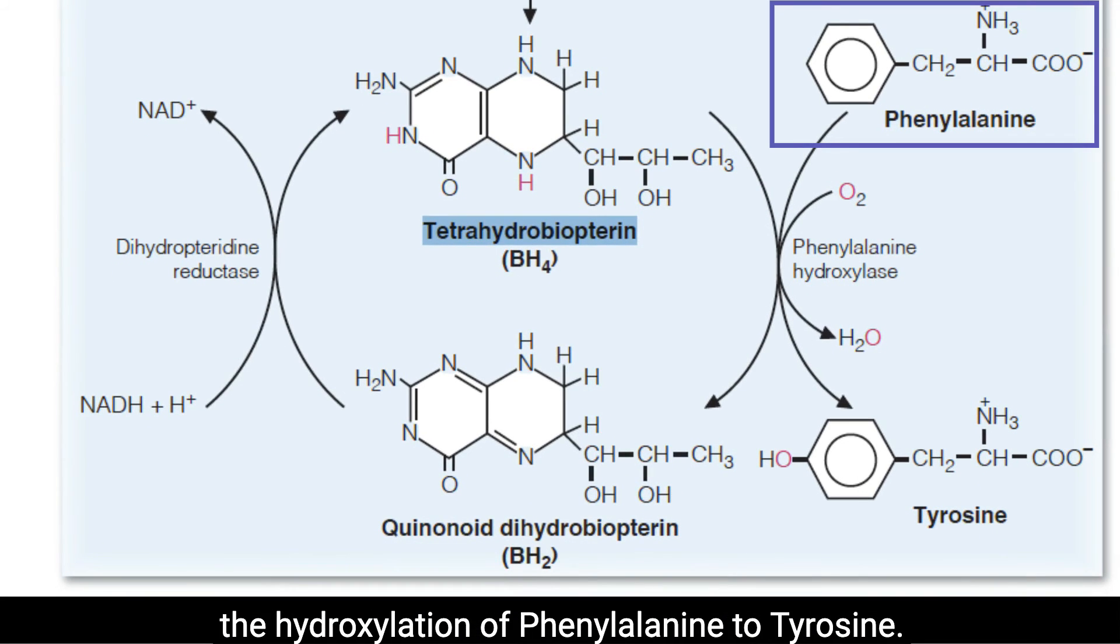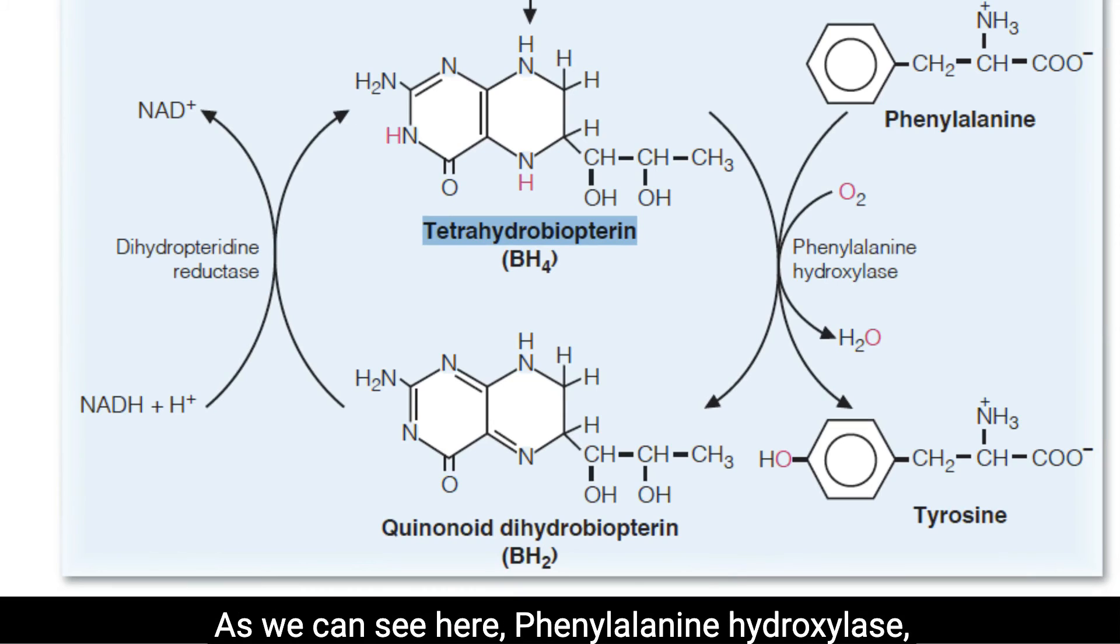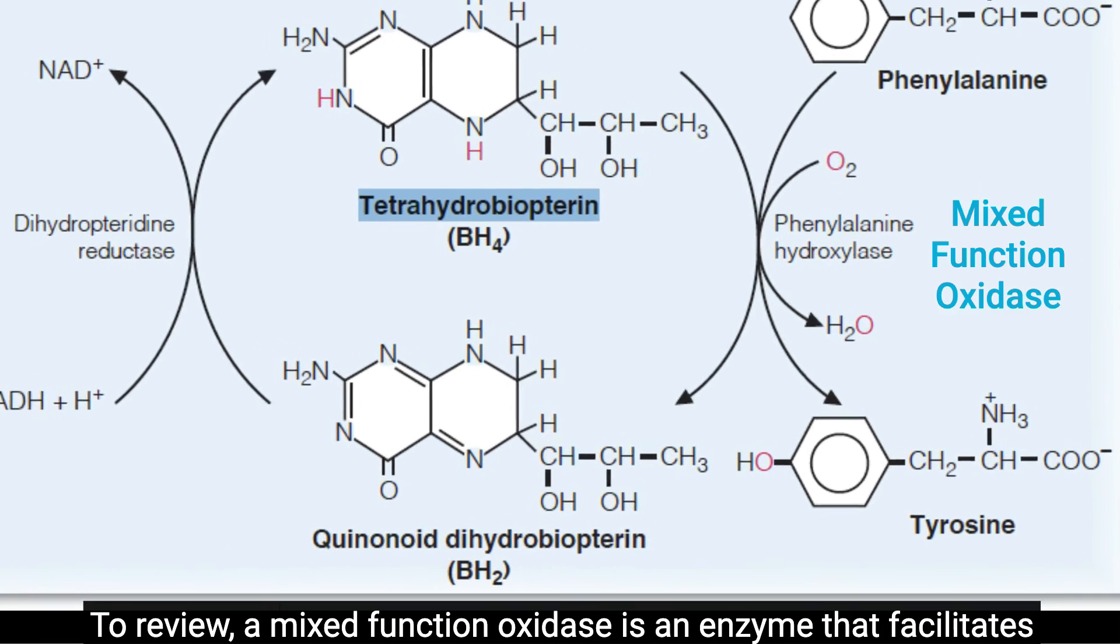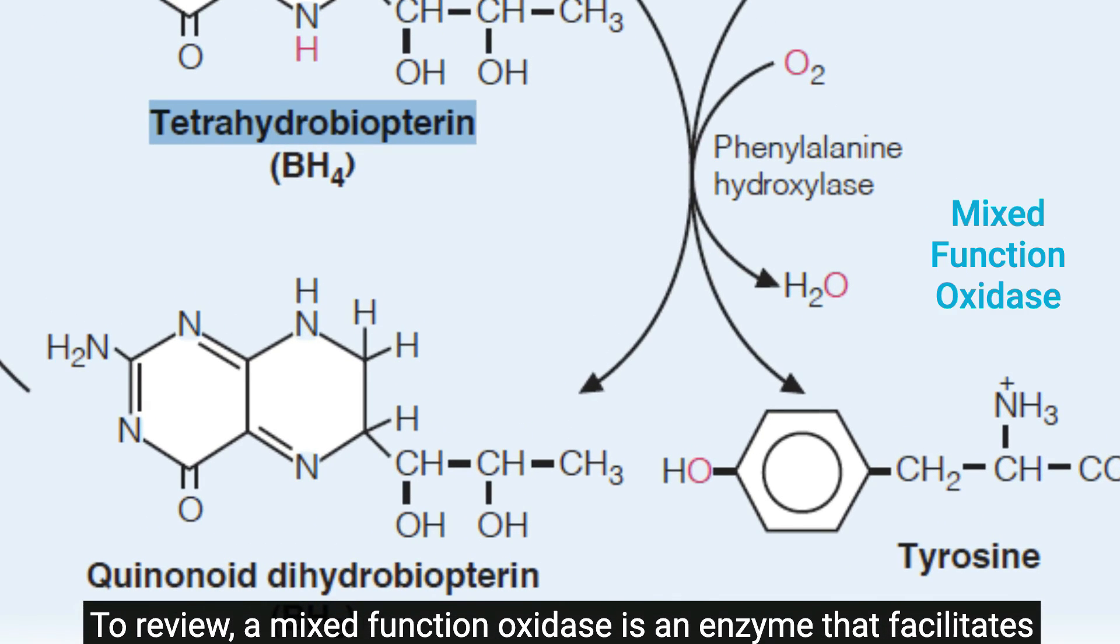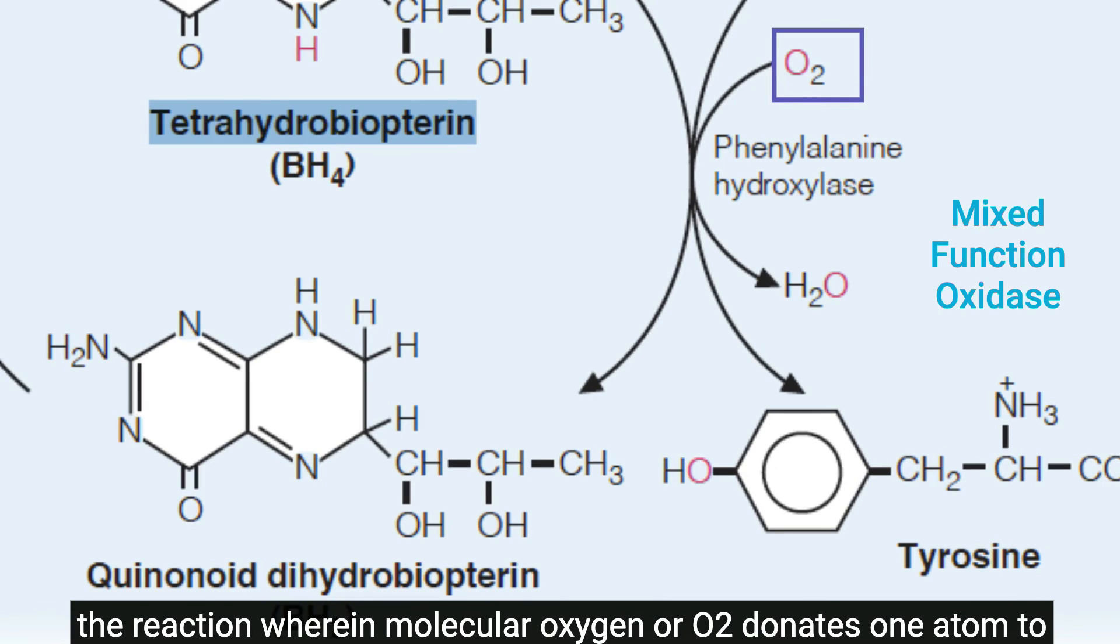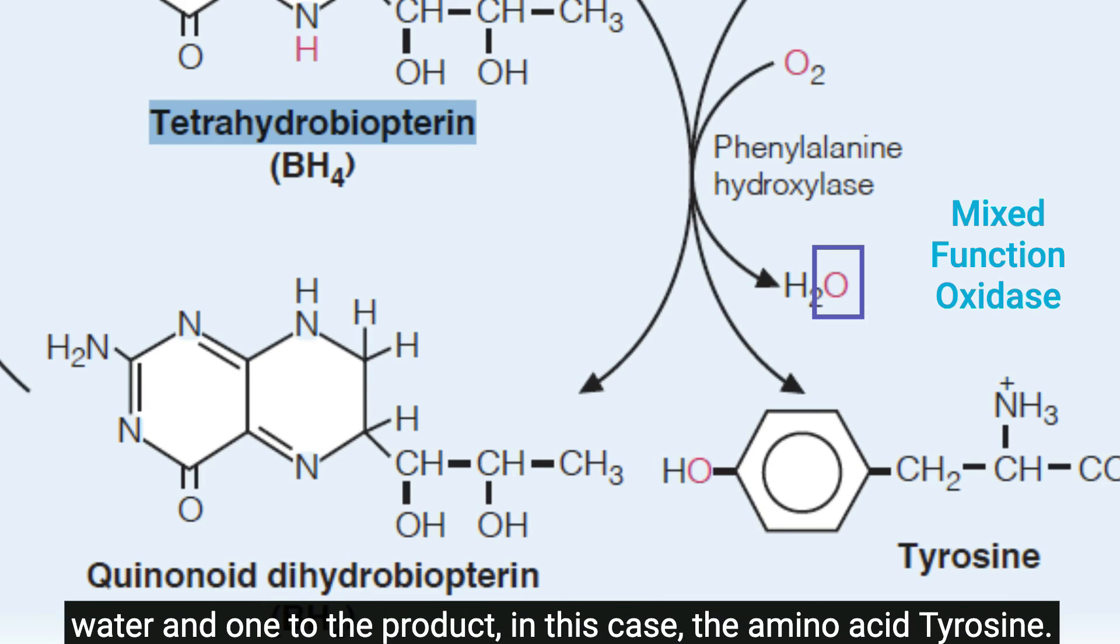Let's look at the particular reaction involving tetrahydrobiopterin, the hydroxylation of phenylalanine to tyrosine. As we can see here, phenylalanine hydroxylase, abbreviated as PAH, is a mixed-function oxidase. To review, a mixed-function oxidase is an enzyme that facilitates the reaction wherein molecular oxygen or O2 donates one atom to water and one to the product, in this case, the amino acid tyrosine.